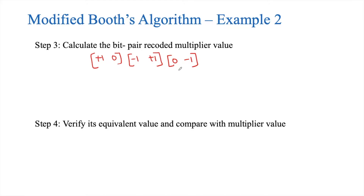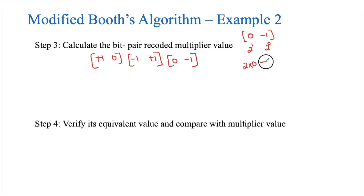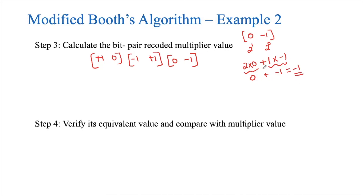Now we calculate the bit-pair recoded value for each pair. For the first pair, 0 and minus 1: the binary weightages are 2 power 1 and 2 power 0. The value is 2 × 0 + 1 × (minus 1) = minus 1. Therefore, the bit-pair recoded equivalent of the pair (0, minus 1) is minus 1.